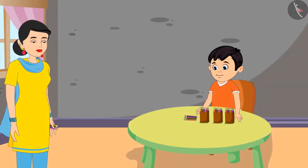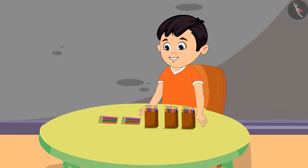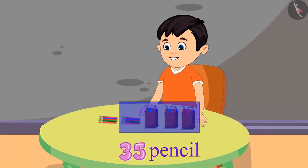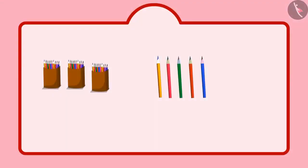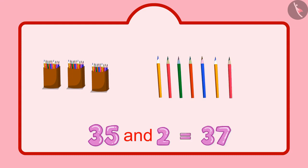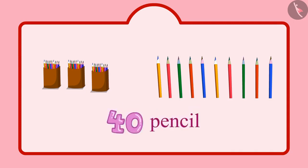After some time, Chotu's mother found some more of his pencils. Chotu, see I have got 5 more of your pencils. Keep these together as well. Okay, mummy. I had 35 pencils, and now 5 pencils more, and that means 5 units more. After 35: 36, 37, 38, 39, 40. So now I have 40 pencils.